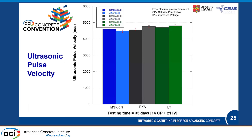Another interesting result is the ultrasonic pulse velocity test. We think we may not be able to use this tool to evaluate the aggregate, because for reactive aggregate the velocity remains the same, while for non-reactive aggregate it increases. However, the difference in values is so small that we would not be able to distinguish a lower total sulfur content aggregate, and the same effect appears.